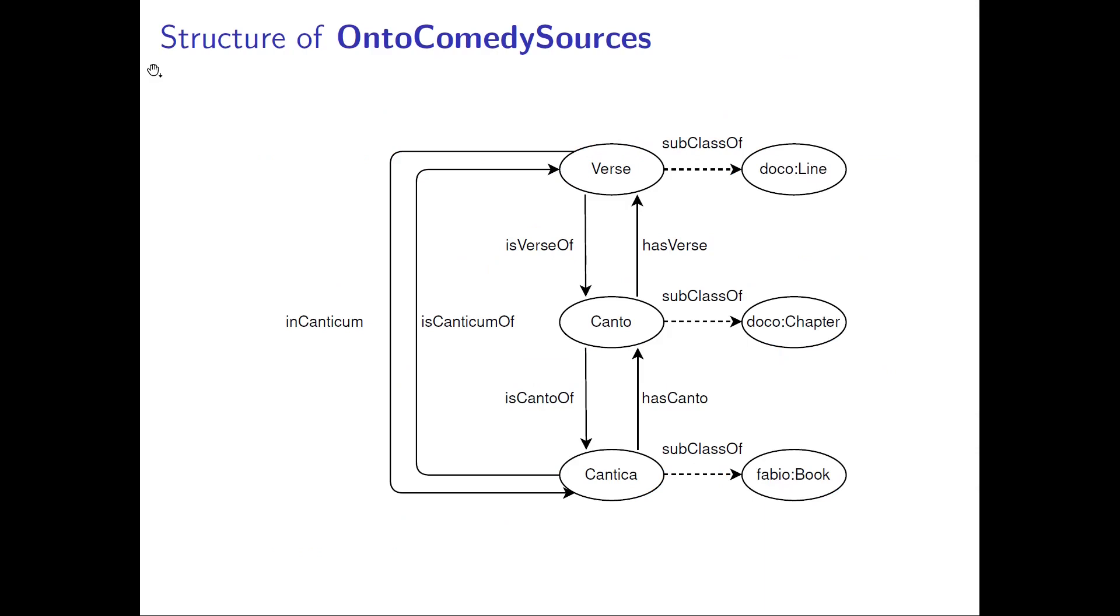I will now begin to describe the structure of our ontology. Here, classes are represented by oval shaped diagrams, while arrows represent properties. As illustrated in this slide, the structure of the Commedia is modeled by the classes verse, canto, and cantica. These are subclasses of line, chapter, and book, respectively.